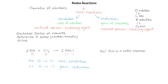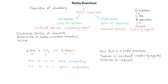So what can we say about this reaction? Yes, it is a redox reaction. Sodium is oxidized because it lost electrons during the reaction. Chlorine is reduced because it gains electrons during the reaction. Since sodium is oxidized, it's also called the reducing agent, and chlorine is reduced so it is called the oxidizing agent.